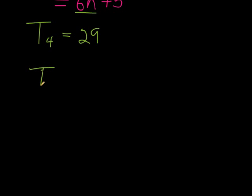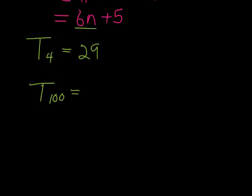Let's say that, well, maybe they ask me to find the 100th term. The 100th term would be 6 times 100. So 6 in the place of the n, we now replace the 100 plus 5, which would be 600 plus 5, 605. And so forth, we can find any possible term given the term's position.